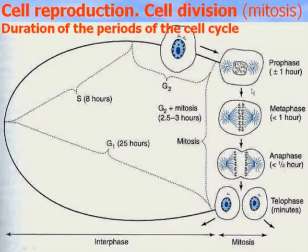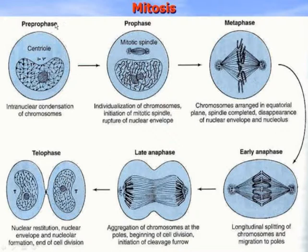Mitosis consists of four phases: prophase, metaphase, anaphase, and telophase. Interphase has G1, S, G2 periods measured in hours.